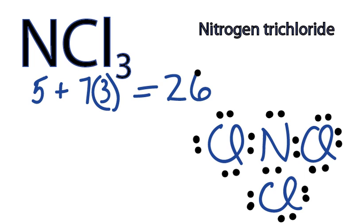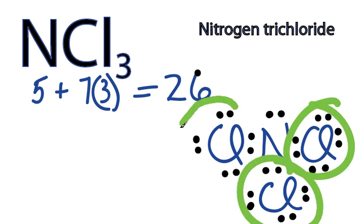So now we need to look and see if we've fulfilled the octets for each of the atoms. Nitrogen in the center, right there, has 2, 4, 6, 8. So that has an octet. And then each of the chlorines has 8 as well. So those have octets.